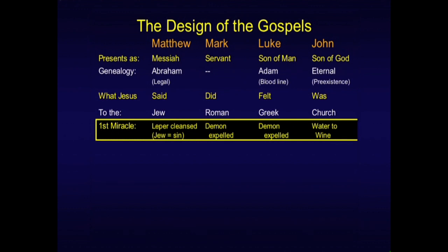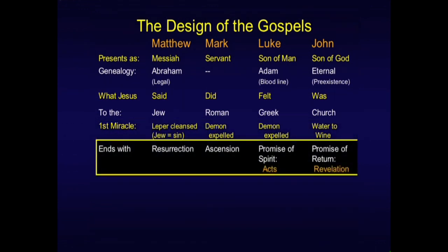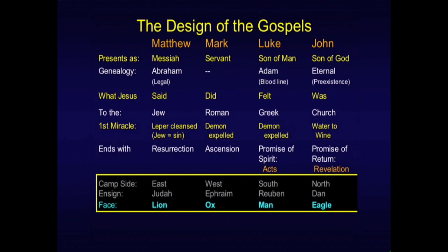The first miracle reflects that same design, as does the way each book ends. Matthew ends in a very Jewish way on the resurrection. Mark ends with the ascension. Luke ends with the promise of the Holy Spirit, setting up his sequel called Luke Volume 2 — the Book of Acts. John ends with the promise of Christ's return, which sets up his sequel, the Book of Revelation. All of these reflect the four camps — the lion, the ox, the man, and the eagle — that modeled the throne of God when the camp was operative.